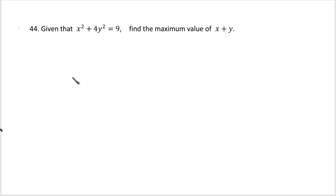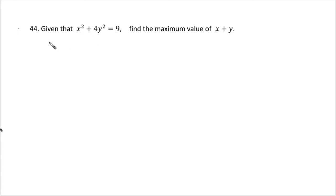Another similar question: given that x² + 4y² = 9, find the maximum value of x + y. You want to solve the constraint for one of the variables. If you try to solve for y you'll have to divide by 4, which isn't pleasant. So let's solve for x², since this is your constraint and x + y is your target. Once you identify those, it's easy to solve.